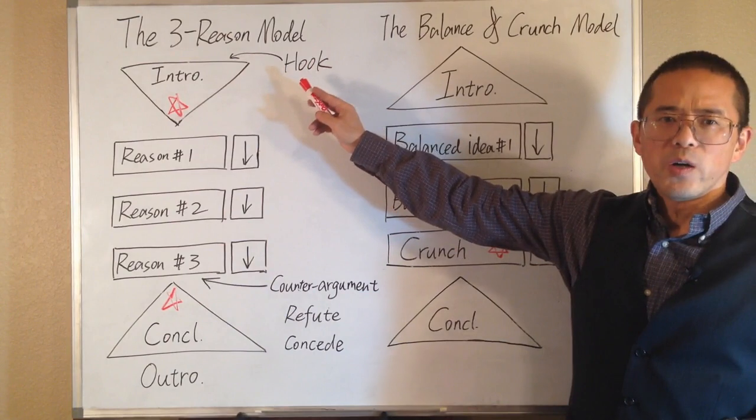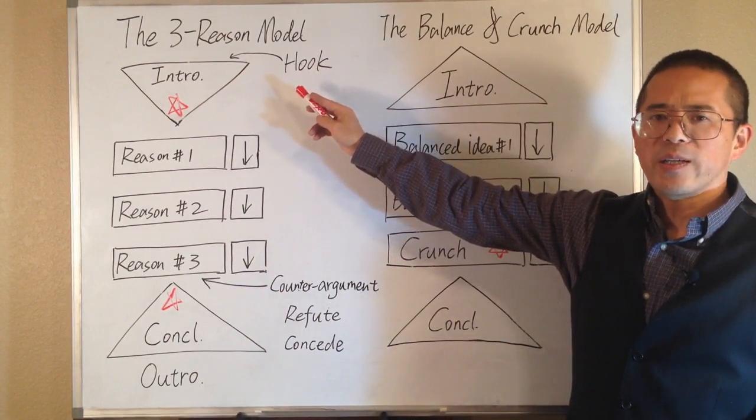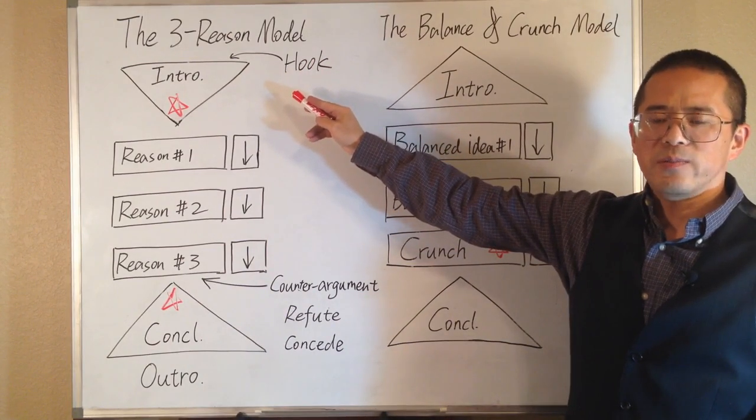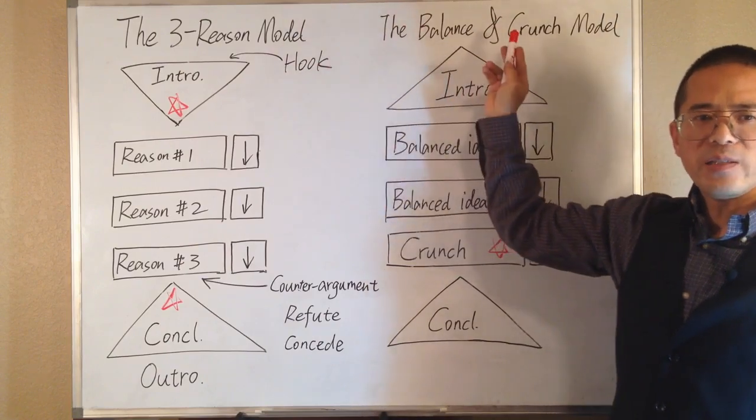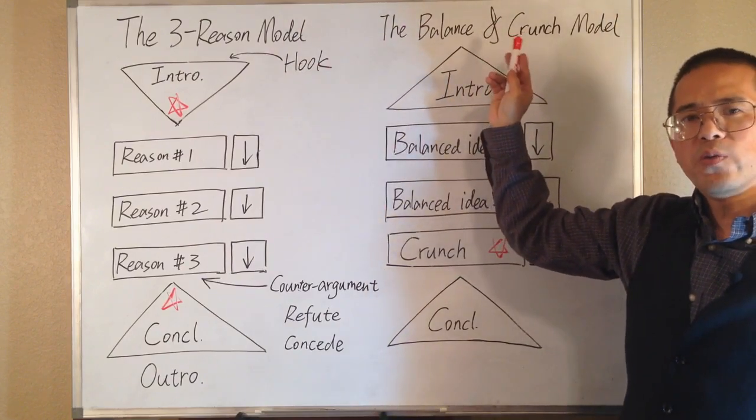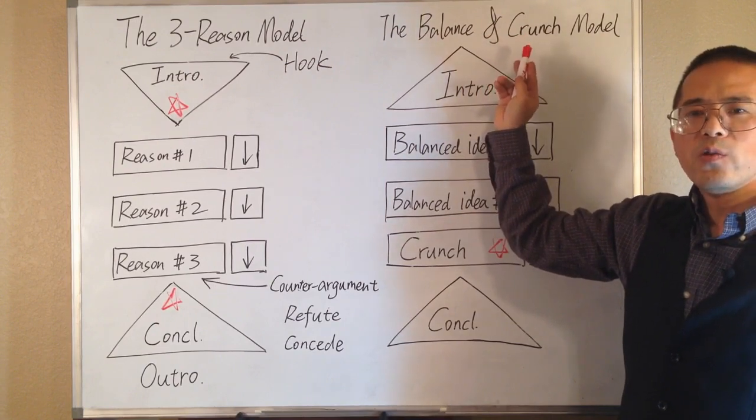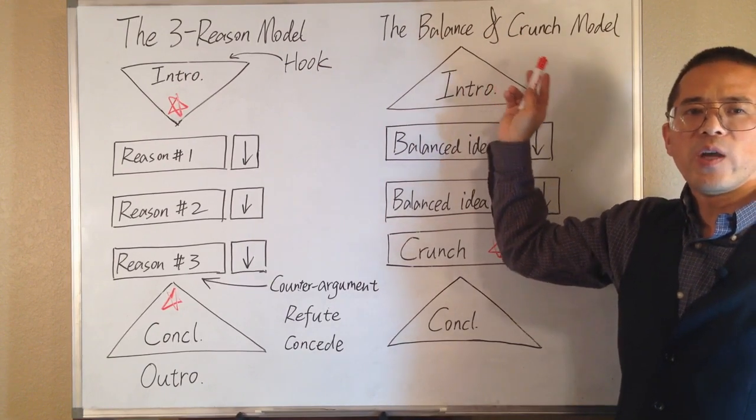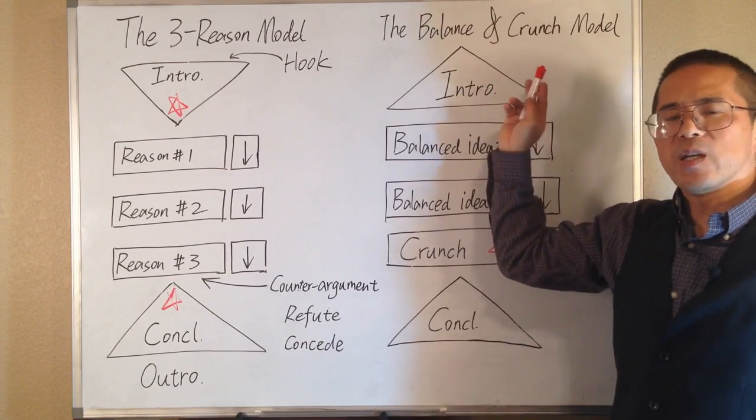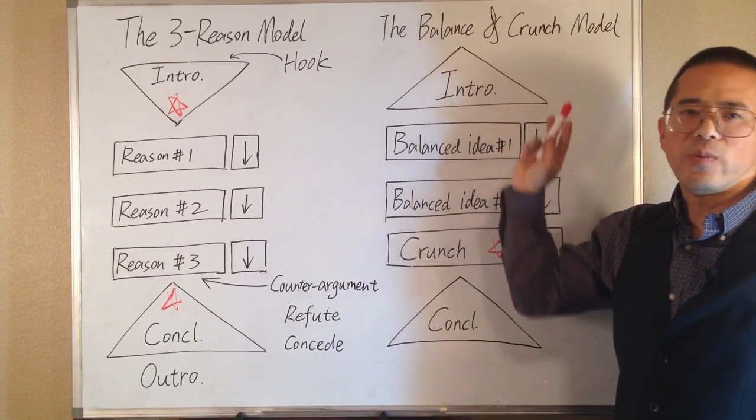In the 3 reason model, we present our own opinion and defend it. We put ourselves first. In the balance and crunch model, we put our reader first. We demonstrate that we really want to help our reader to understand the situation, and make a good informed decision on the topic.